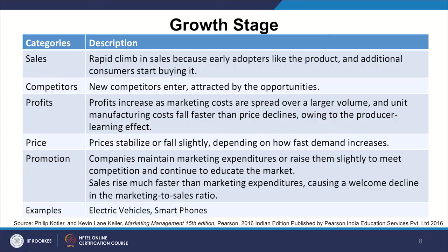It depends upon what situation you are in — that is why acknowledging and foreseeing are the product manager's key tasks. Companies maintain marketing expenditure or raise it slightly, or even reduce it if doing very well, to meet competition and continue to educate the market. Many times they use strategies like flighting — spurts of promotion followed by reduction, then another spurt. Sales rises much faster than marketing expenditure, causing a welcome decline in the marketing-to-sales ratio.